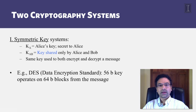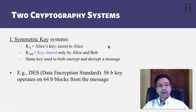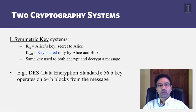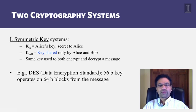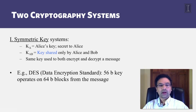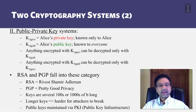There are two important flavors of cryptography systems: symmetric and asymmetric. In symmetric key systems, Alice may be given a key noted as K_A, which is secret to Alice. There may also be a shared key between Alice and Bob, denoted as K_AB, known to both Alice and Bob, used to encrypt and decrypt messages between them — the same key K_AB is used for both. For instance, the Data Encryption Standard (DES) uses 56-bit keys, splits messages into 64-bit blocks, applies the key to encrypt each block, and concatenates the outputs.